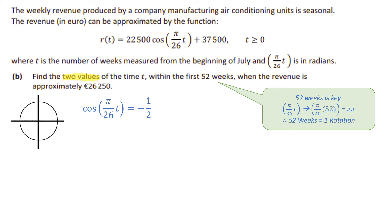We look at our unit circle and put in where everything is positive or negative — I use CAST. In the first quadrant all are positive; second quadrant sine is positive; third quadrant tan is positive; fourth quadrant cosine is positive. Here cosine is negative, so we're in either the second or third quadrant.